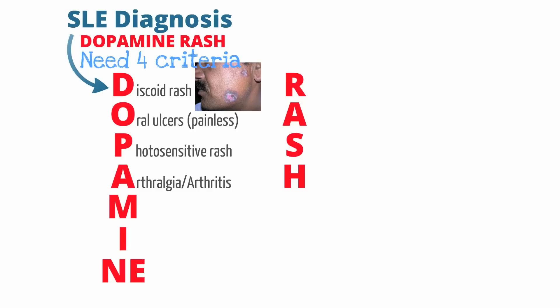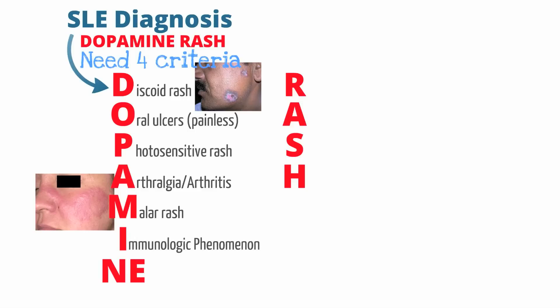A classic physical exam finding for a lupus patient is the malar rash. The malar rash affects the cheeks and the bridge of the nose. In a truly classic rash, it appears in the shape of a butterfly, covering the nasal bridge and both cheeks. Another criteria is immunologic phenomenon, which includes detection of anti-smooth muscle antibody, anti-double-stranded DNA, anti-Rho and anti-LA, otherwise known as SSA and SSB.